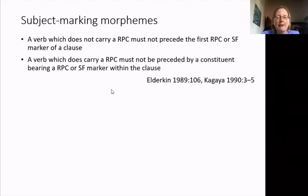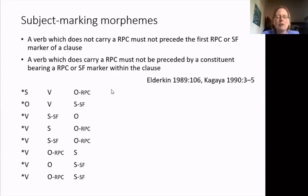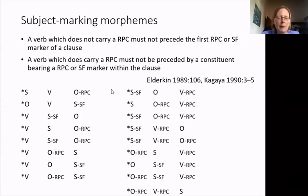One restriction is that a verb which does not carry an RPC must not precede the first subject marking morpheme of a clause. The other is that a verb which does carry the RPC must not be preceded by a constituent bearing a subject marking morpheme. The following eight combinations of constituent order and subject marking are ungrammatical by the first restriction, because in each instance we have a verb not carrying a subject marking morpheme which precedes the first one in the clause. An additional ten combinations are ungrammatical by the second restriction — in all of these, the verb is marked with the RPC, but so is something else before it.